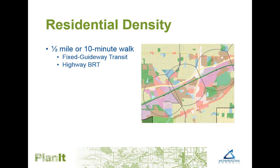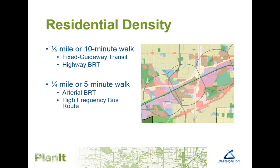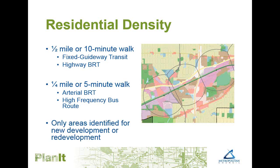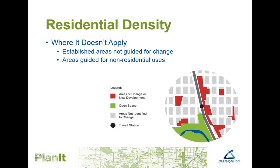Residential density expectations only apply to areas within a half-mile or 10-minute walk of fixed guideway transit stations — an example of the Southwest Corridor or Metro Green Line extension is shown on the screen. For arterial BRT or high-frequency bus routes, it applies to a smaller geographic area — a quarter-mile radius or a five-minute walk. This density requirement only applies to areas identified for new development or redevelopment. We want to emphasize that the residential density requirement is not a blanket requirement: it only applies to areas that the city has guided for residential development or redevelopment and does not apply to established residential areas not guided for change, or to areas guided for non-residential uses.